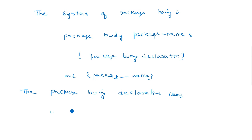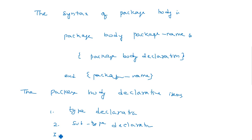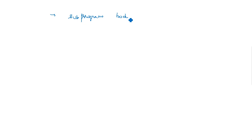Package body declarative items include: type declaration, constant declaration, subprogram body, and use clause. Some of these are also part of the package declaration. All these different package body items must be initialized in the program. If any package is missing, you can directly create it using the package and package body syntax. Thank you.